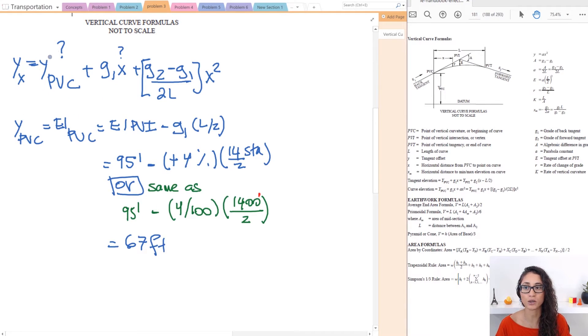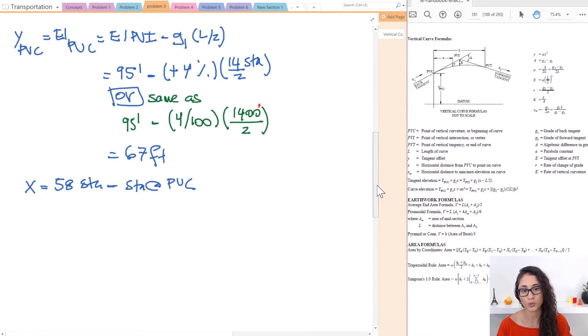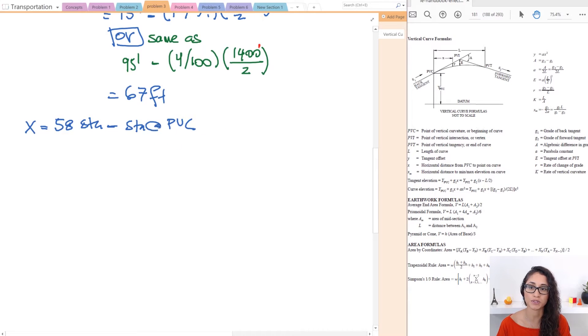Okay so if you plug in this you should get an answer of 67 feet. So we found our elevation for PVC, now we just have to calculate for X. So we said X is going to be the given station and we have to subtract the station at PVC, right?